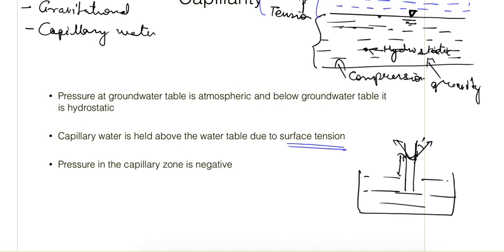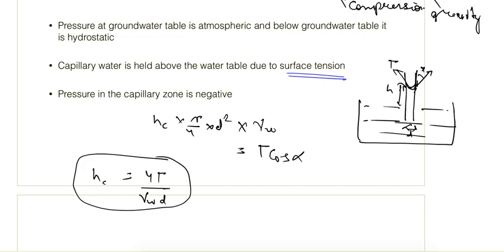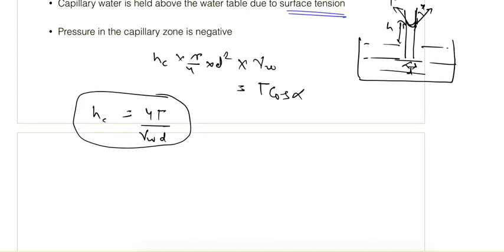To find the capillary rise, we equate the surface tension force to the weight of the water column. The weight of water in the column is hc × (π/4) × d² × γw, which equals the vertical component of the surface tension force. From this, hc = 4T·cosα / (γw × d). If cosα is approximately equal to 1, this simplifies further. Using this formula, some empirical relationships are derived for soil.